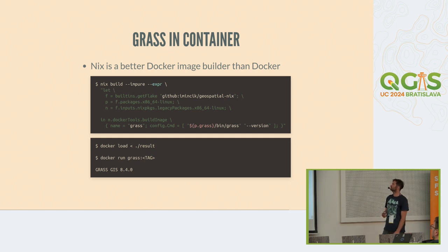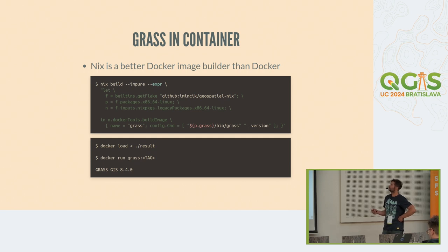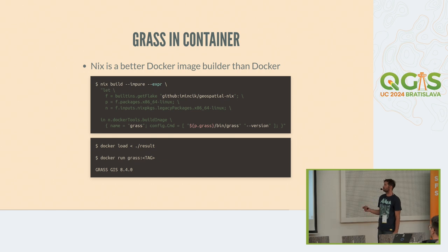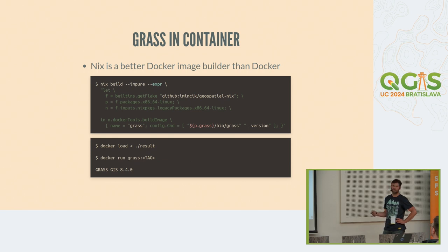Nix is even better in some ways — people are saying it's a better Docker image builder than Docker itself. There's a function called buildImage which takes the name of the image and other arguments. If I say I want to run GRASS in my image and run the grass --version command, that's everything needed for this function to build a fully functional Docker image which will be able to run GRASS. So if I use this piece of code, it generates a Docker image which I can load, and when I run it I have GRASS inside — no Dockerfile with unnecessary commands.